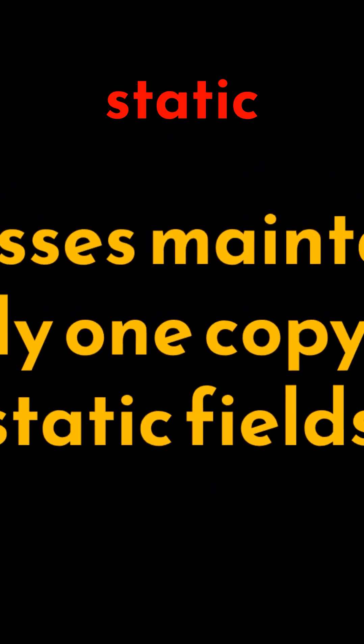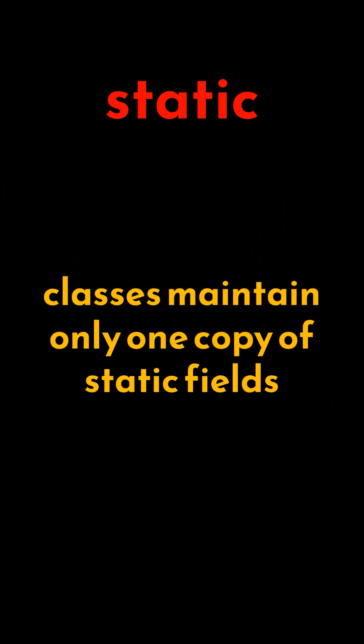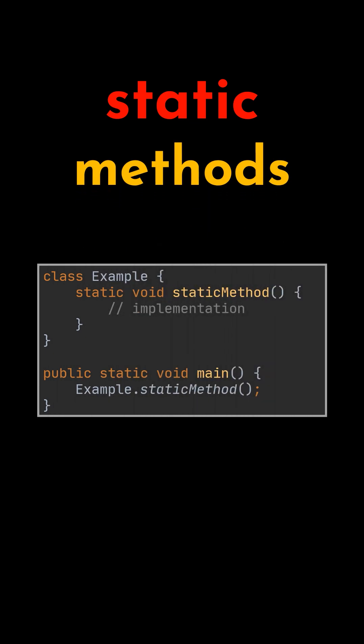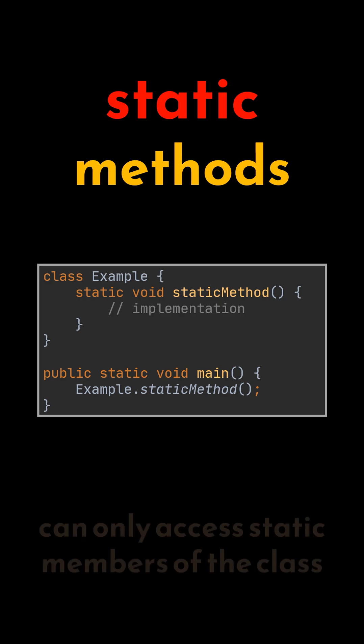Classes maintain only one copy of static fields and do not create multiple instances of them. For example, when applied to a method, this method can be called without creating an instance of the class. In this case, static methods can be called directly on the class.